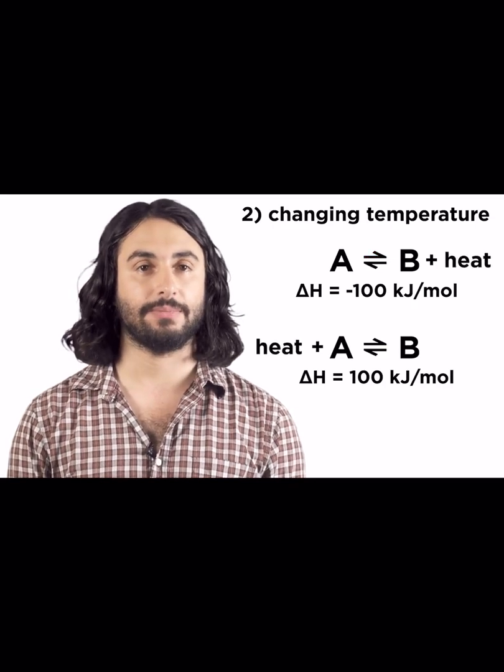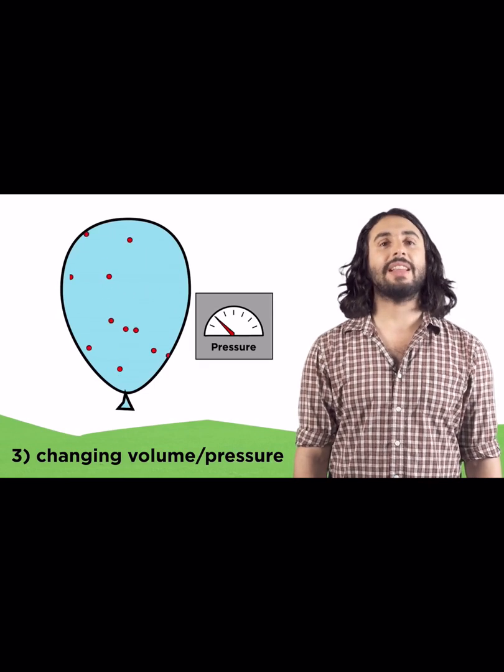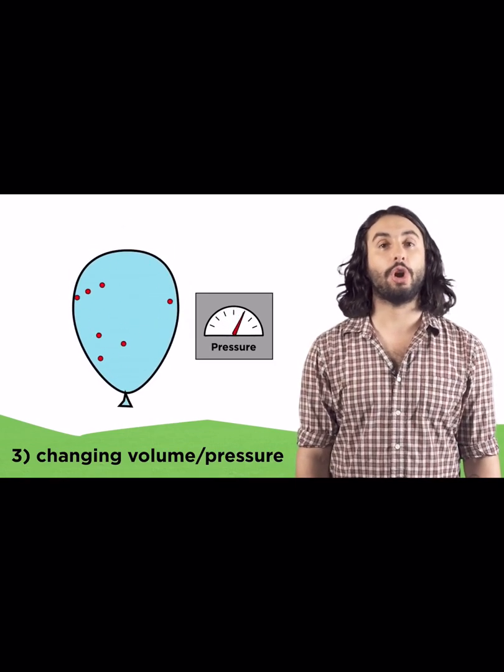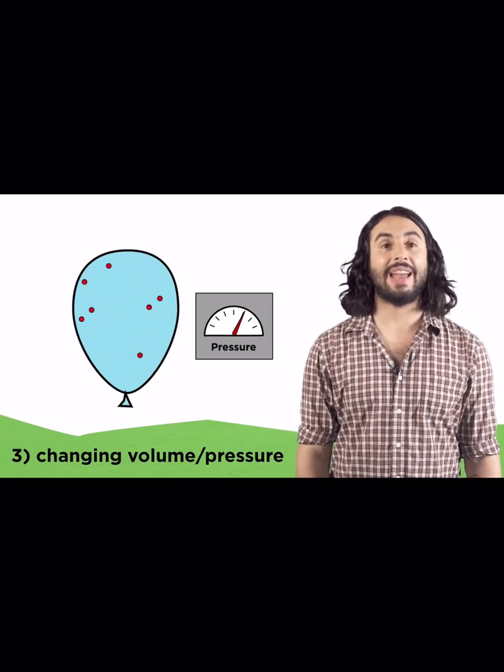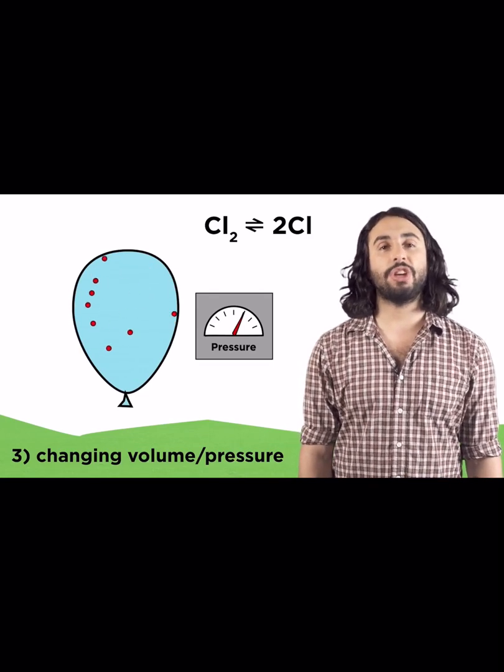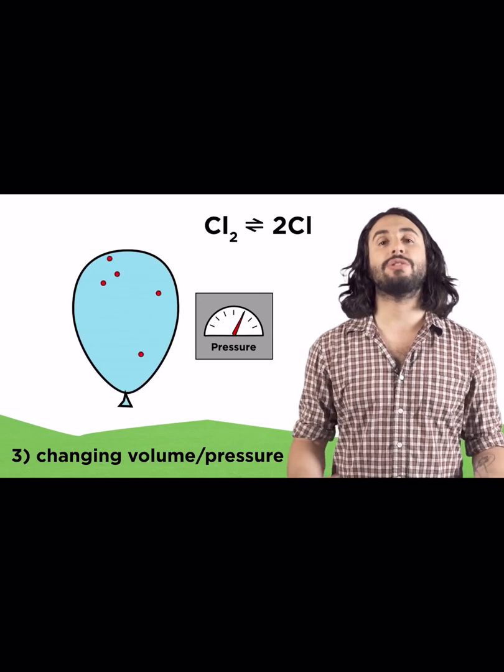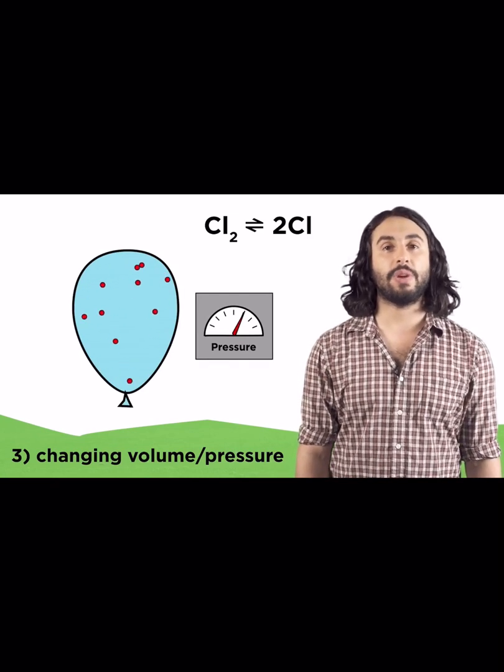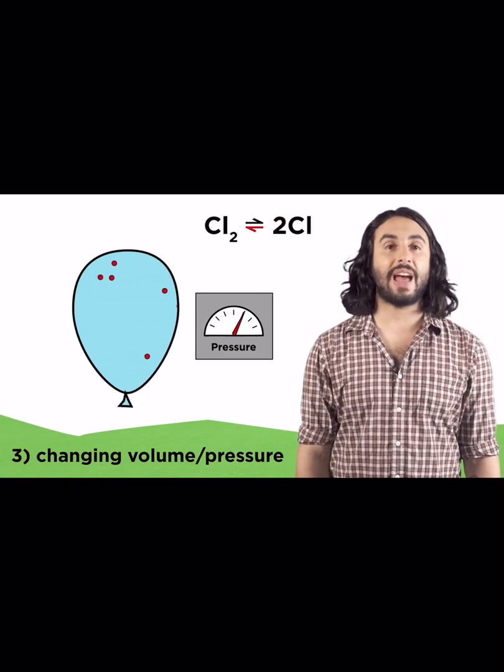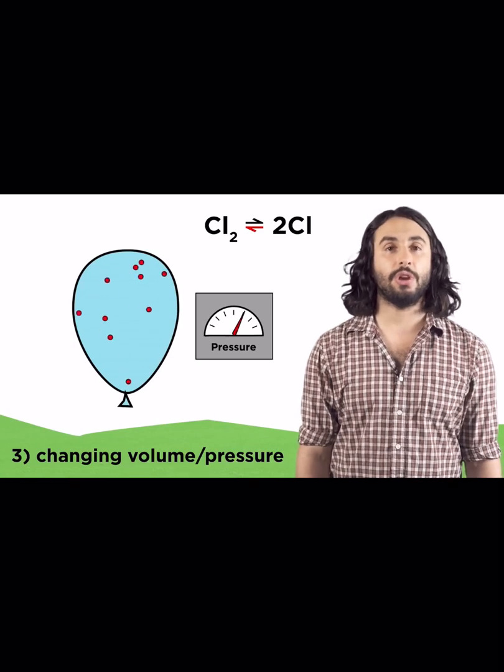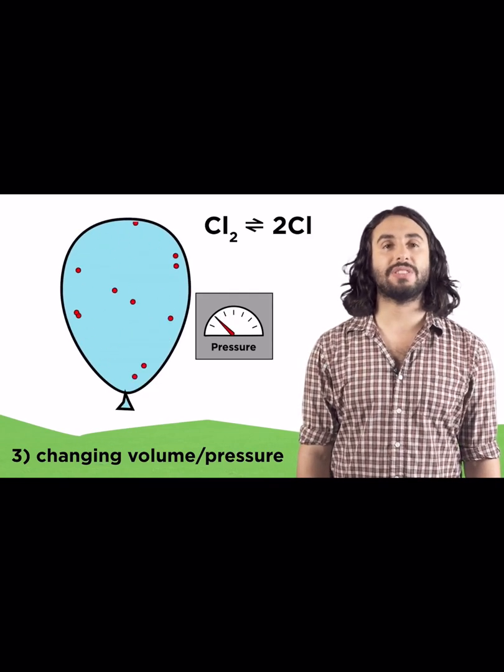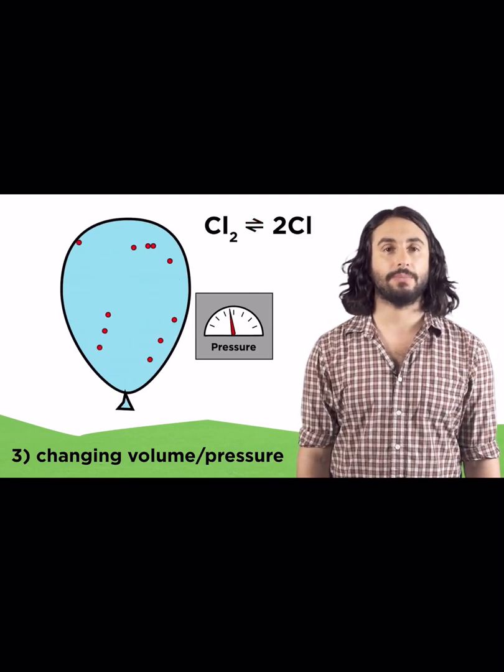The third stress we can examine is changing the volume or pressure. Let's say the equilibrium involves gases in a balloon. What if we decrease the volume? If we remember Boyle's law, we know that the pressure will go up since the smaller the volume, the more the particles will hit the sides and exert pressure. If there is a discrepancy in the number of moles of particles on either side of the equilibrium, it will shift towards the side with fewer particles so as to alleviate some of the additional pressure. In this equilibrium between a diatomic molecule and two monoatomic species, the right side has twice as many particles, so shifting left means atoms fusing together, resulting in fewer particles which lowers the pressure on the container. If we increase the volume, thereby lowering the pressure, the equilibrium would shift towards the side with more particles in order to regain some of the lost pressure.